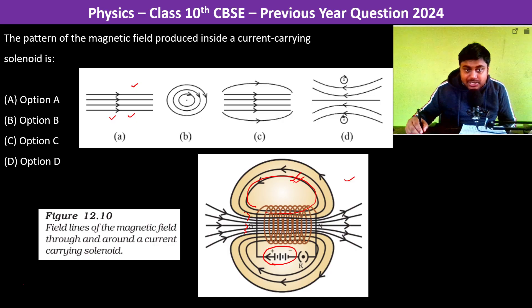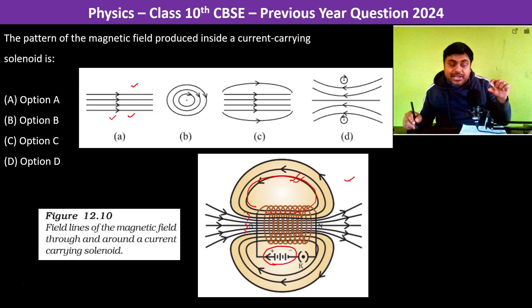This is correct. It is like these lines are parallel which are there inside the current carrying solenoid.